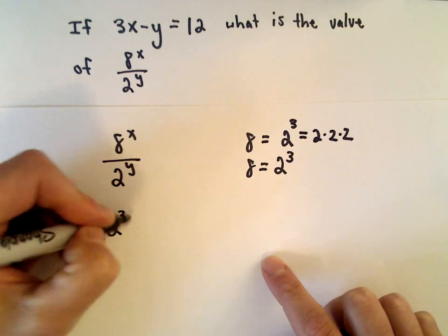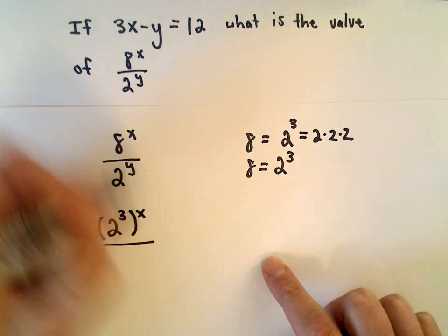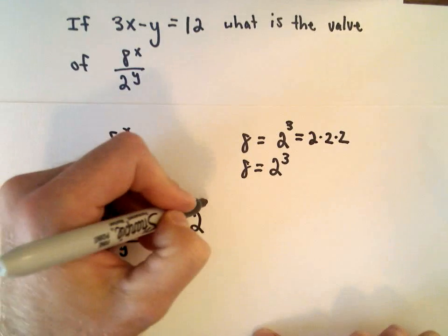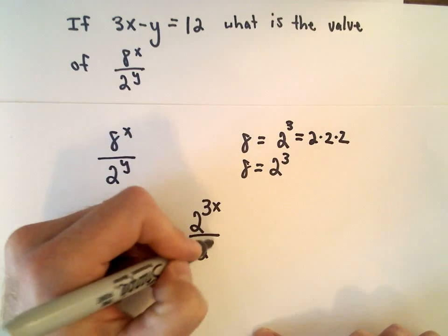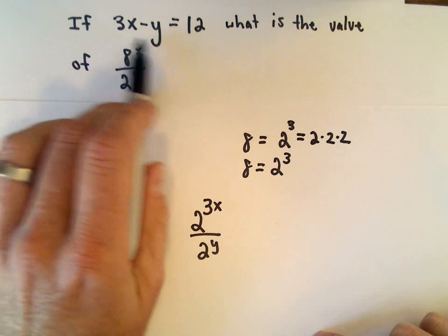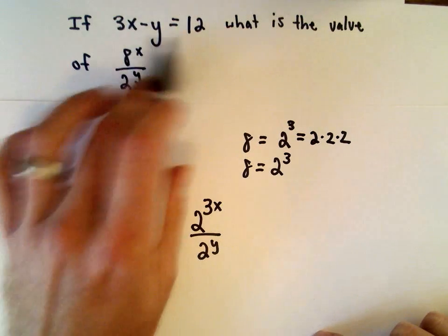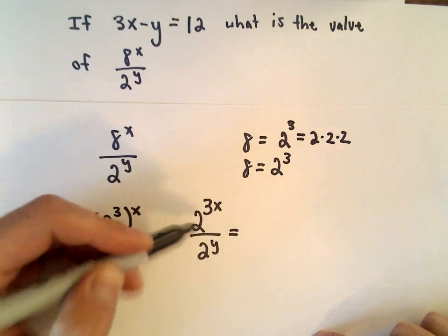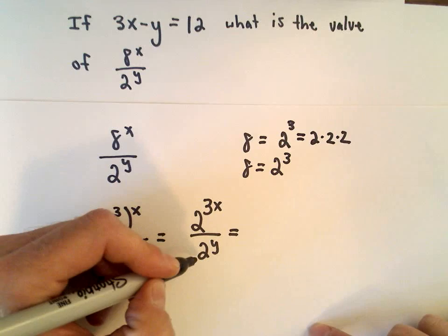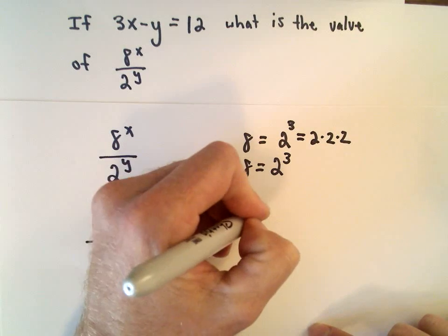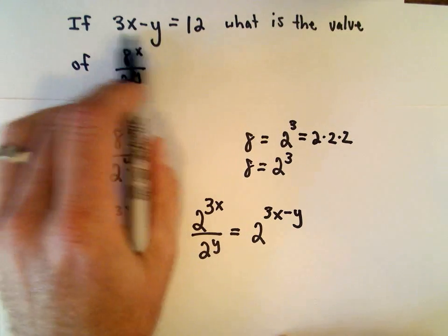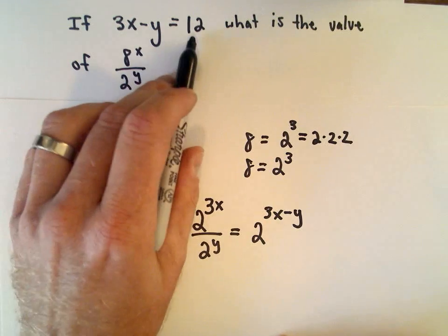So I can have 2 to the third, raised to the power of x — that's what I'm replacing my 8 with — divided by 2 raised to the power of y. This gives us 2 raised to the power of 3x over 2 to the y. I'm seeing 3x and y, which looks like the 3x minus y from the original equation. Using properties of exponents, we can write 2 to the 3x divided by 2 to the y as 2 raised to the power of 3x minus y. And we're given that 3x minus y equals 12.